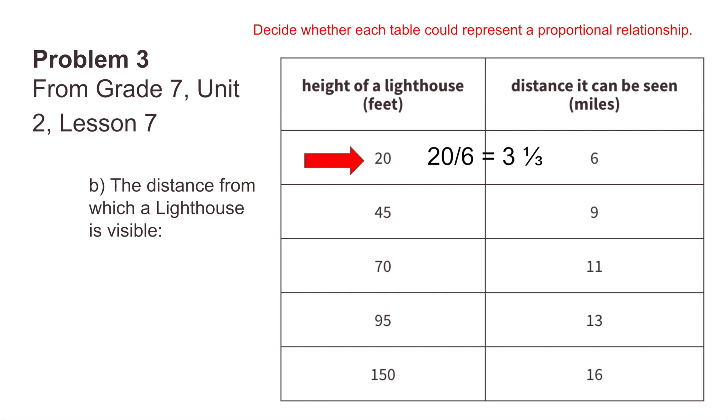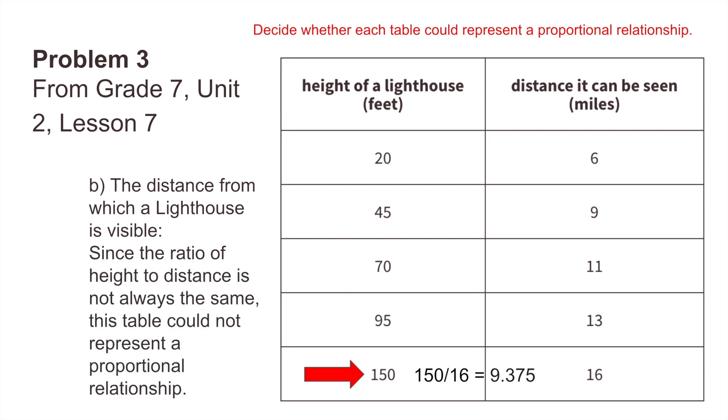So 20 divided by 6 is 3 and a third. 45 divided by 9 is 5. 70 divided by 11 is 6.36 and so on. 93 divided by 13 is 7.30 and so on. 150 divided by 16 is 9.375. So you notice that these are not the same. Since they're not the same, this table cannot represent a proportional relationship.